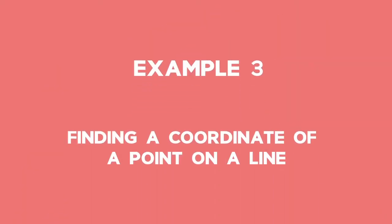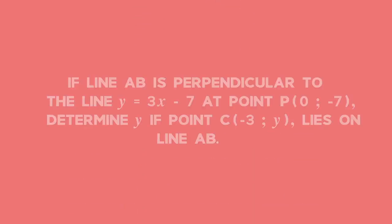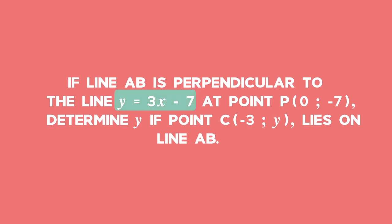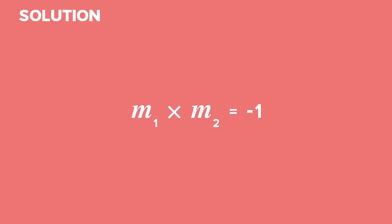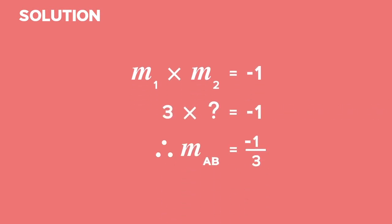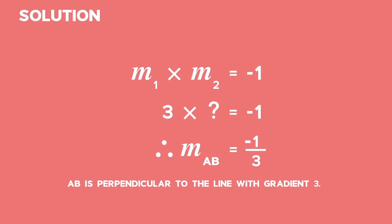Example 3: Finding a coordinate of a point on a line. Line AB is perpendicular to the line y equals 3x minus 7 at point P (0, negative 7). Determine y of point C (negative 3, y) which lies on line AB. The product of the gradients of perpendicular lines equals negative 1. Therefore, the gradient of AB equals negative 1 divided by 3, since AB is perpendicular to the line with gradient 3 — the negative reciprocal of 3.